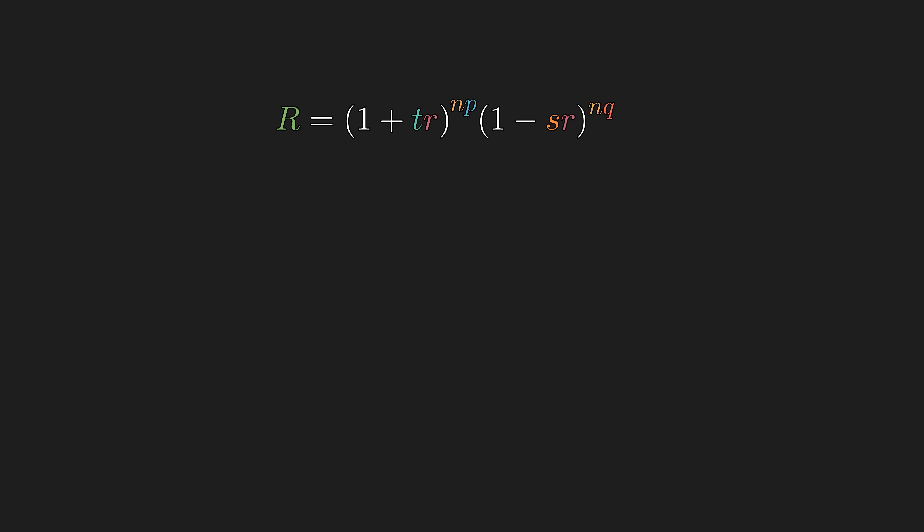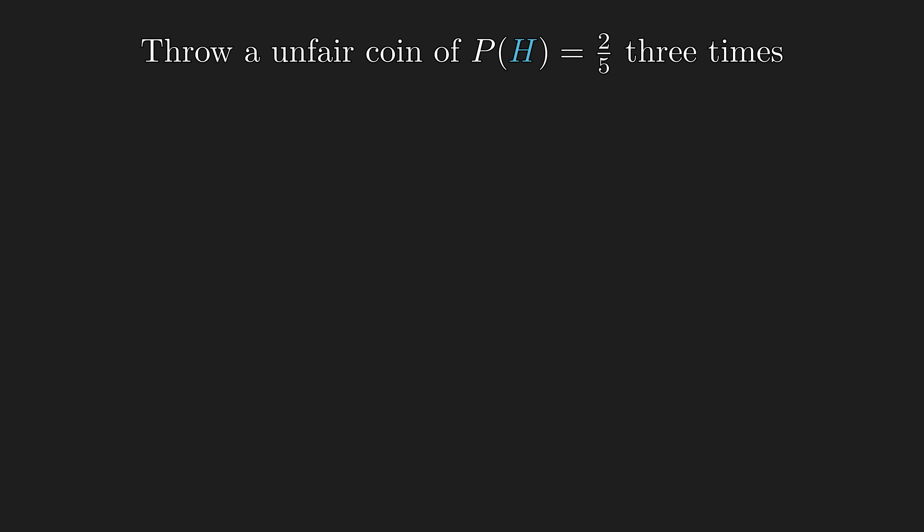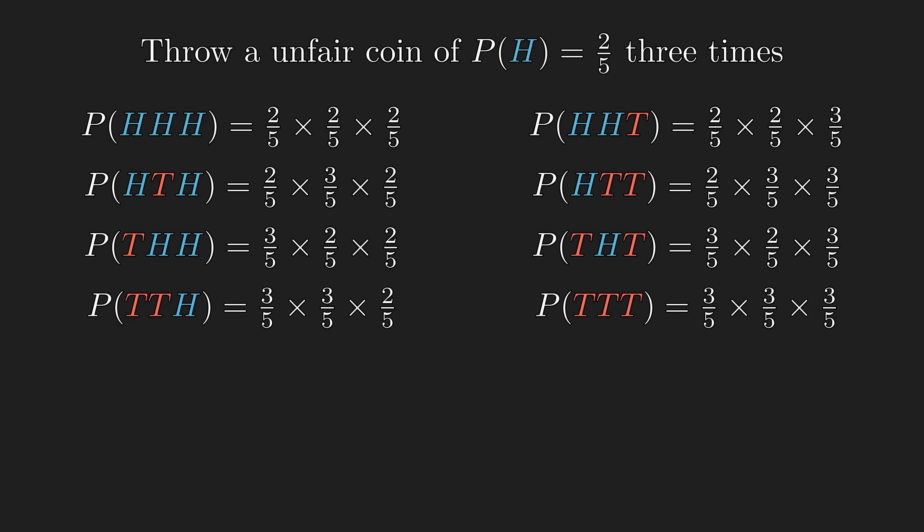To make sense of 'average total return' we introduce random variables. Consider tossing an unfair coin 3 times — there are 8 possible events with computable probabilities. A random variable is a function assigning a numerical value to each event, turning raw non-numerical data (sequences of heads and tails) into numerical data. For example, X(HHT) = 2. In the modern view it is a function; earlier it was naively thought of as a variable taking on random values. X can take values 0, 1, 2, or 3.